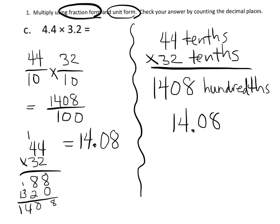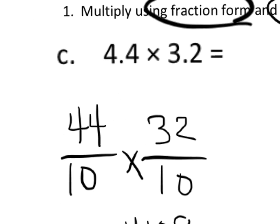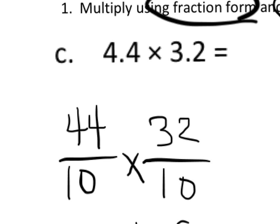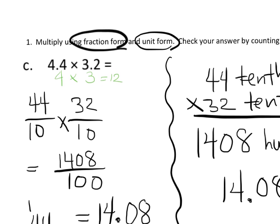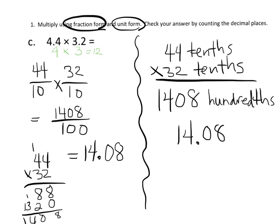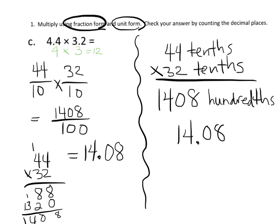Well, let's do a little bit of estimation here. So 4.4, that's pretty close to 4. 3.2, that's pretty close to 3. So 4 times 3 is 12. So we know that our answer has to be something close to 12. And sure enough, 14.08, out of all the numbers in the world, 14.08 is pretty darn close to 12. So that tells us our answer is reasonable.